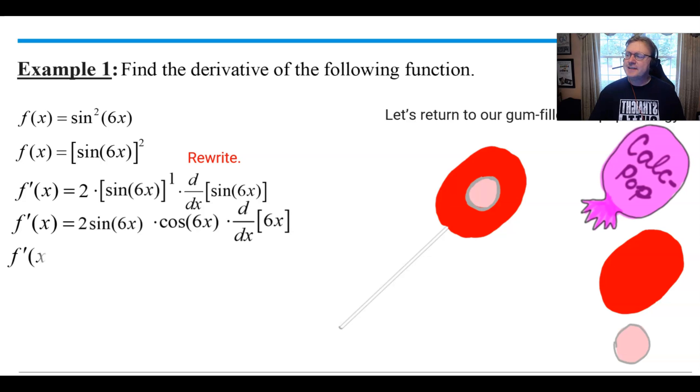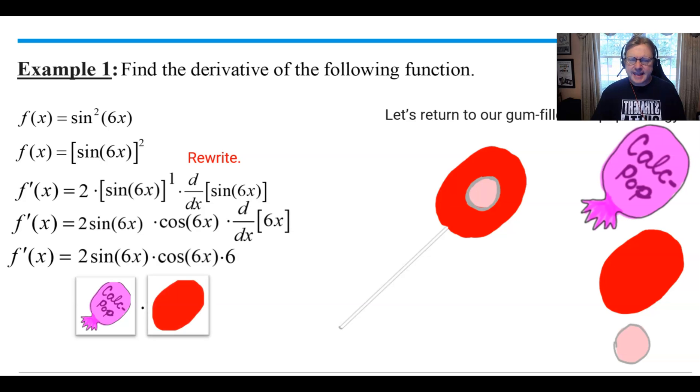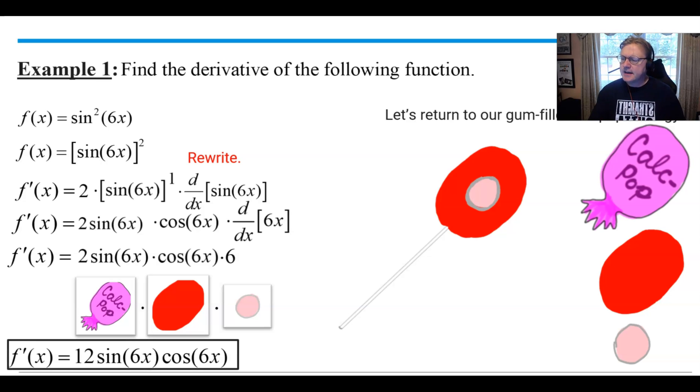We're almost done because we're just going to drop down the previous information that we had and then focus our attention on the derivative of that something else, which was 6x. And of course that derivative is just simply 6. That would complete this derivative. When you look at it more closely, you've got the wrapper in our first position multiplied by the candy shell in the middle, and that derivative of 6x to get 6 is our gum-filled center. All of this can be simplified to just be 12 times the sine of 6x times the cosine of 6x.